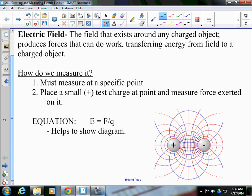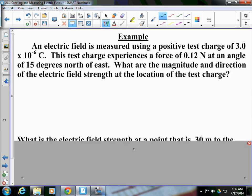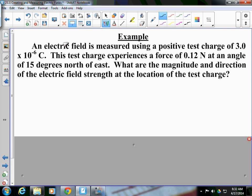If we do some mathematics with the electrical field, we can get two problems. Let's do the first one first. An electric field is measured using a positive test charge of 3.0 times 10 to the negative 6. So right away, we know the value of our test charge q, which is 3.0 times 10 to the negative 6.